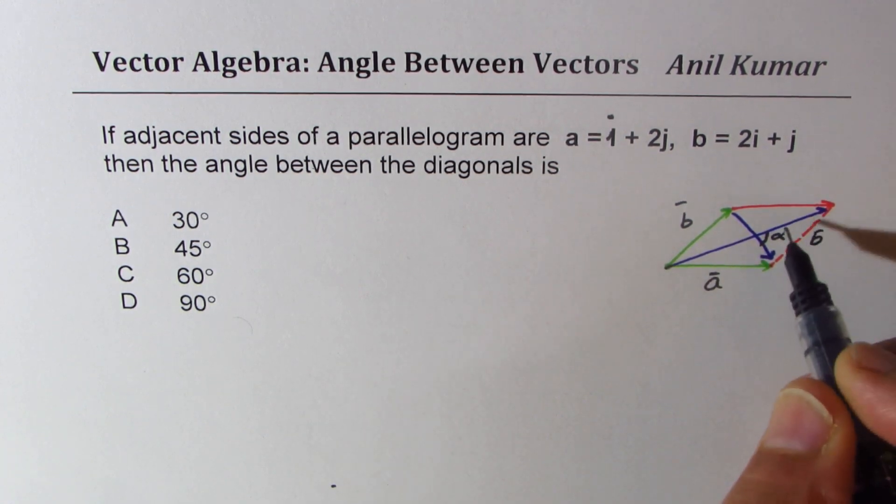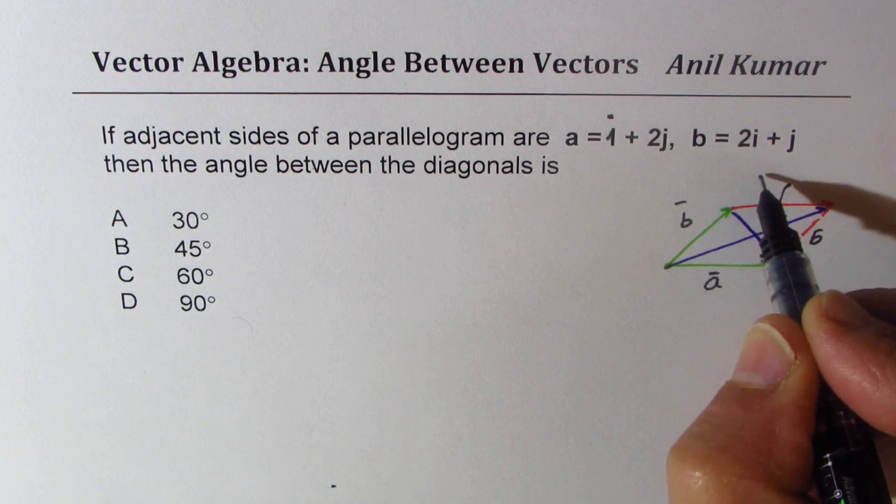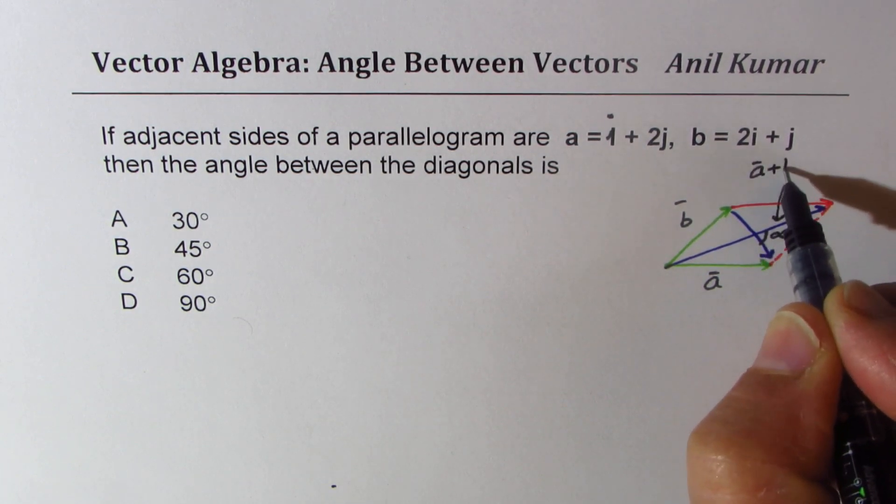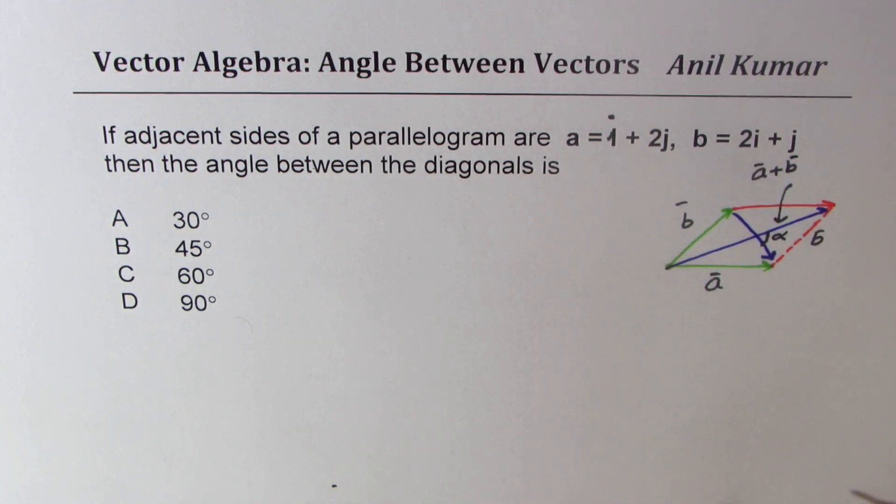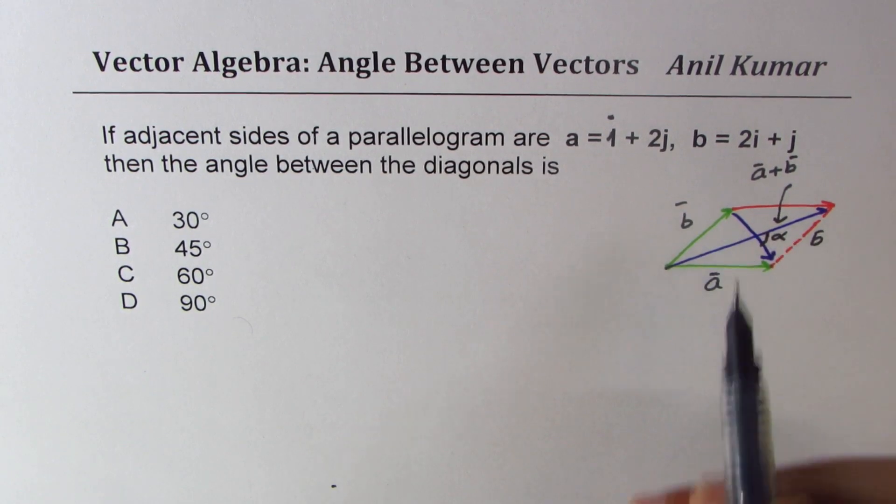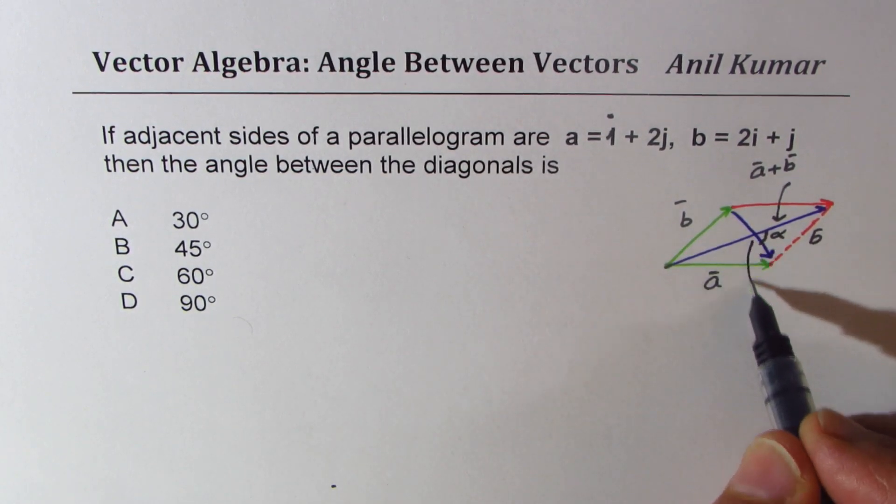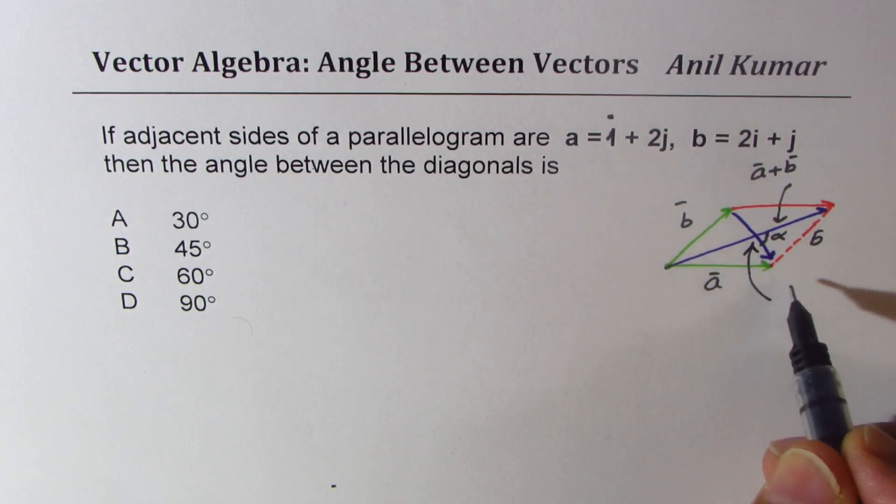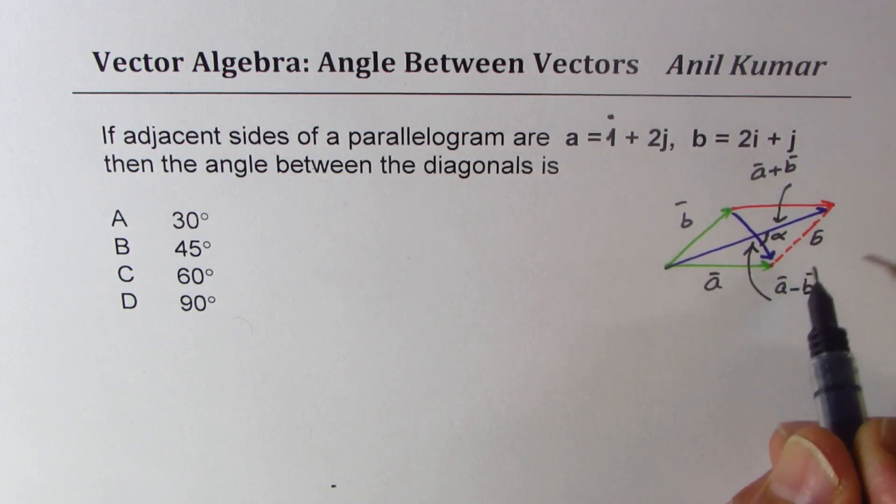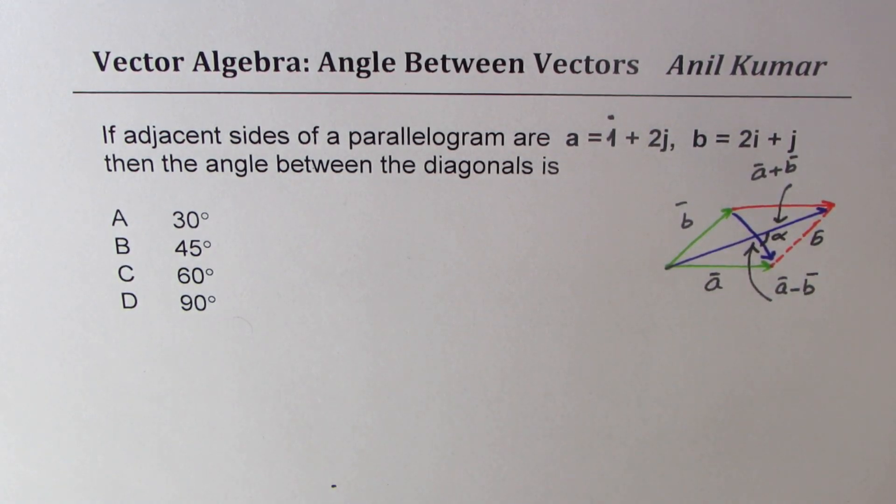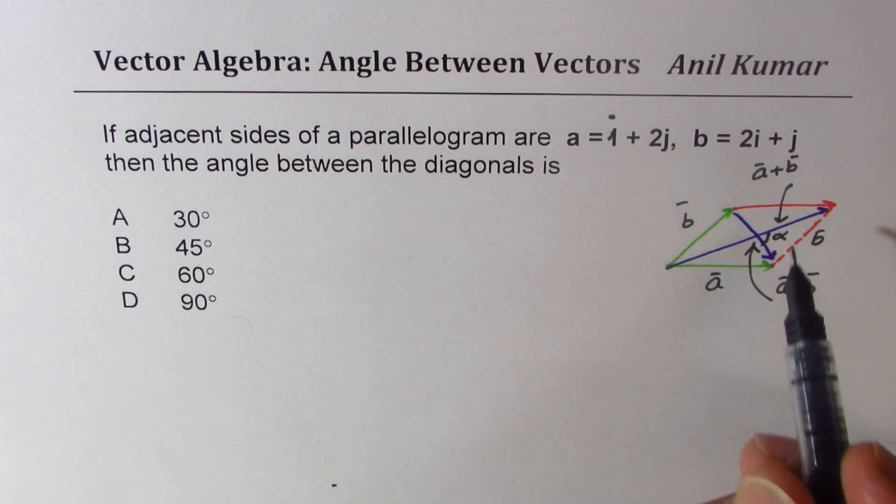Therefore this diagonal will be a + b. Now how about the other one? The other diagonal will be a - b. So that is how you get the two diagonals. So let's call these diagonals a + b and a - b.